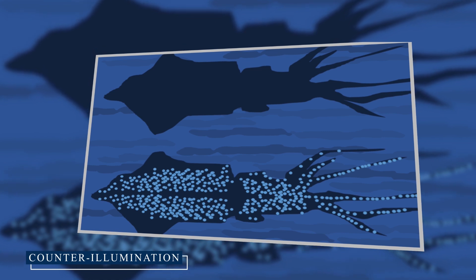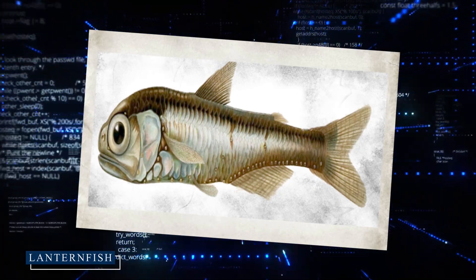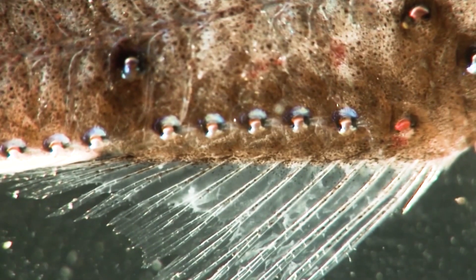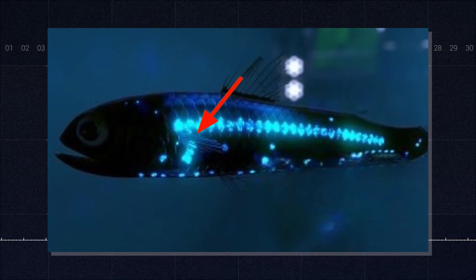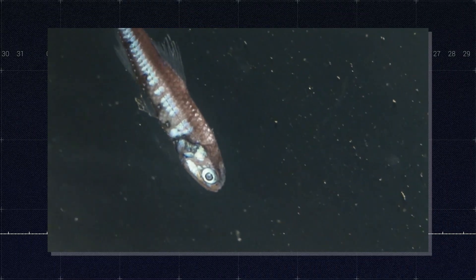In a world where any silhouette against the faint light from above can attract unwanted attention, some deep-sea creatures have evolved a clever form of camouflage using bioluminescence. This technique, known as counter-illumination, is particularly common among mid-water fish like lanternfish. Lanternfish have rows of light-producing photophores along their undersides. These organs emit a soft glow that matches the faint sunlight filtering down from above. By adjusting the intensity of this light, the fish can effectively erase their silhouette, blending seamlessly with the surrounding water.